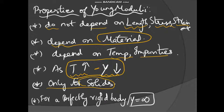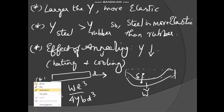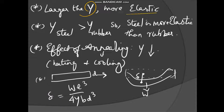Young's modulus is applicable only for solids. Since Y = (F/A) / (ΔL/L), for a perfectly rigid body we cannot increase its length, so ΔL = 0, making Young's modulus infinite. Therefore, Young's modulus for a perfectly rigid body is infinite. Also, the larger the Young's modulus value, the more elastic the material. Young's modulus of steel is greater than that of rubber, so steel is more elastic than rubber.